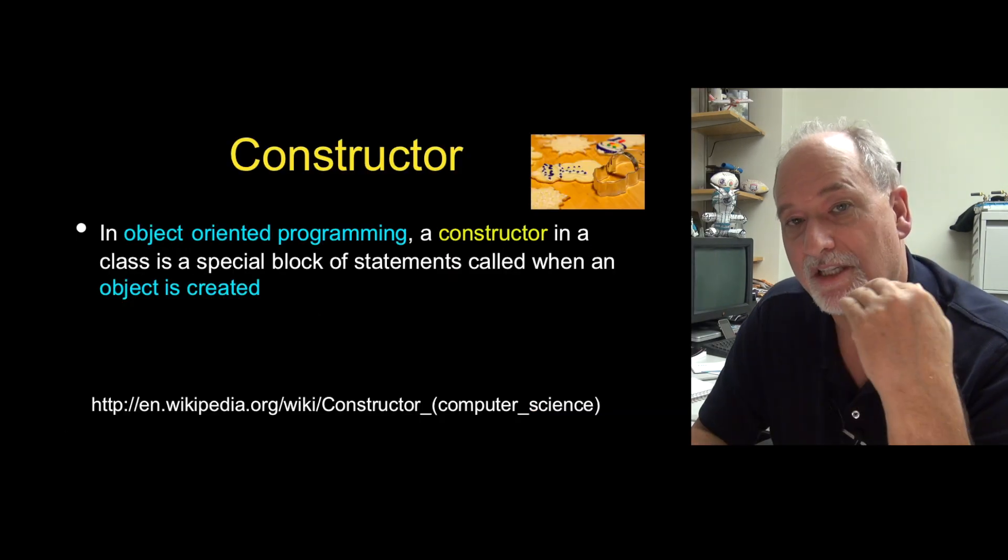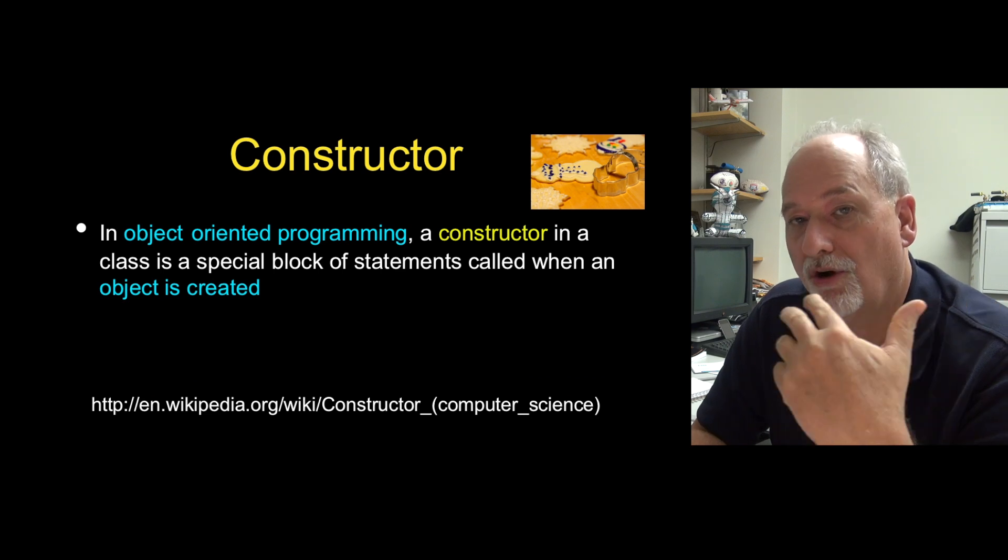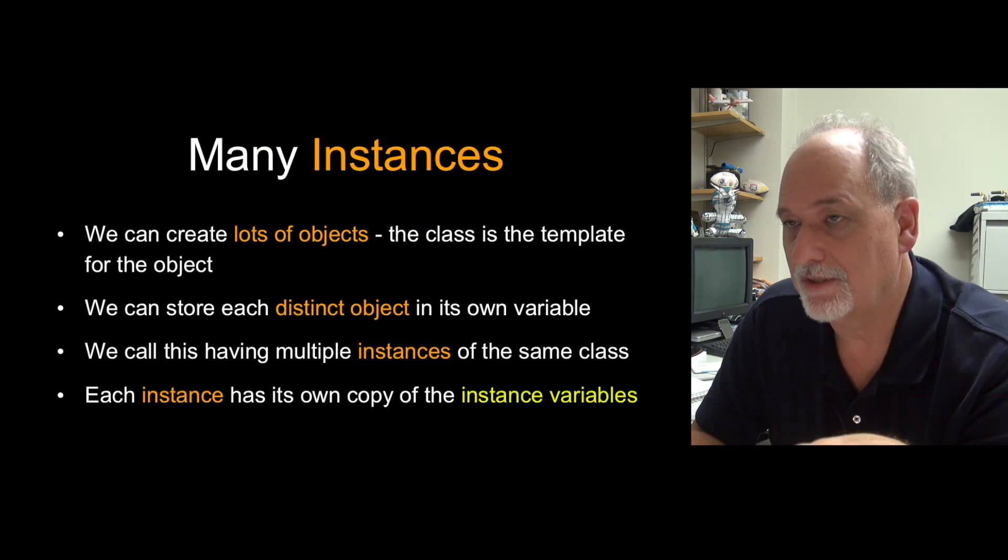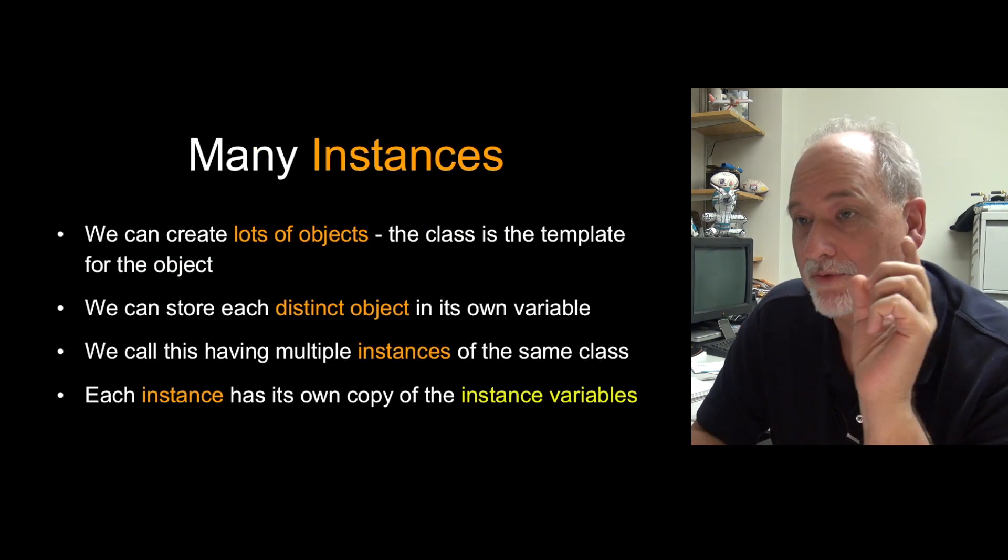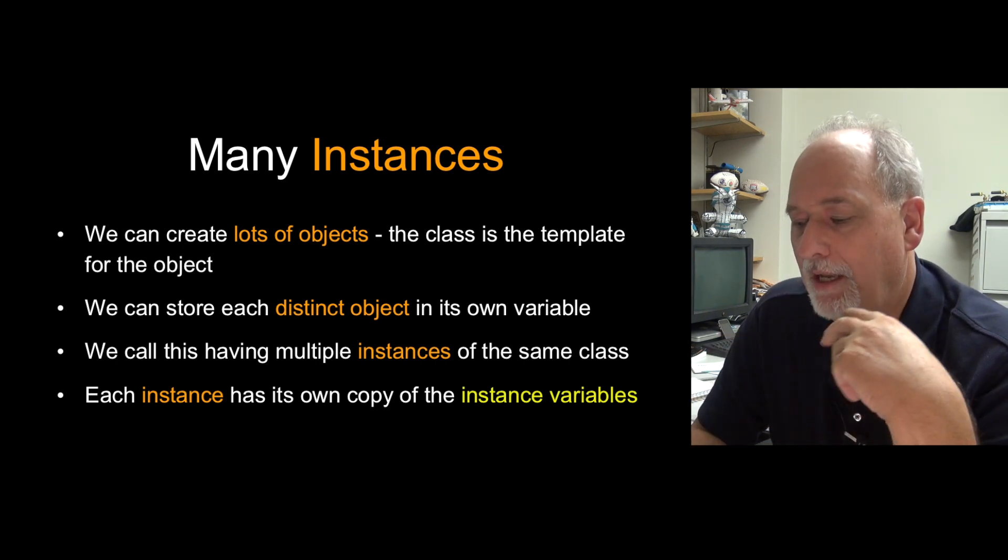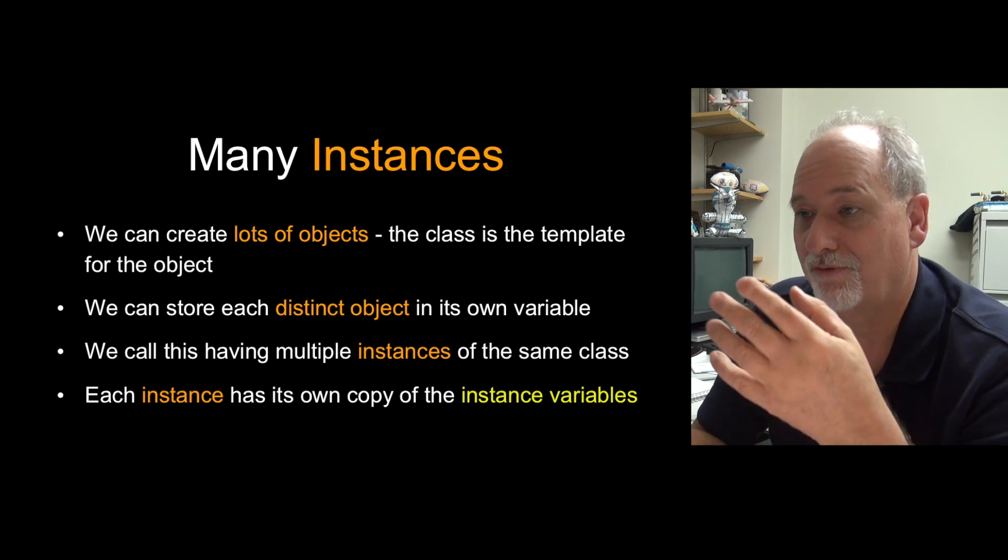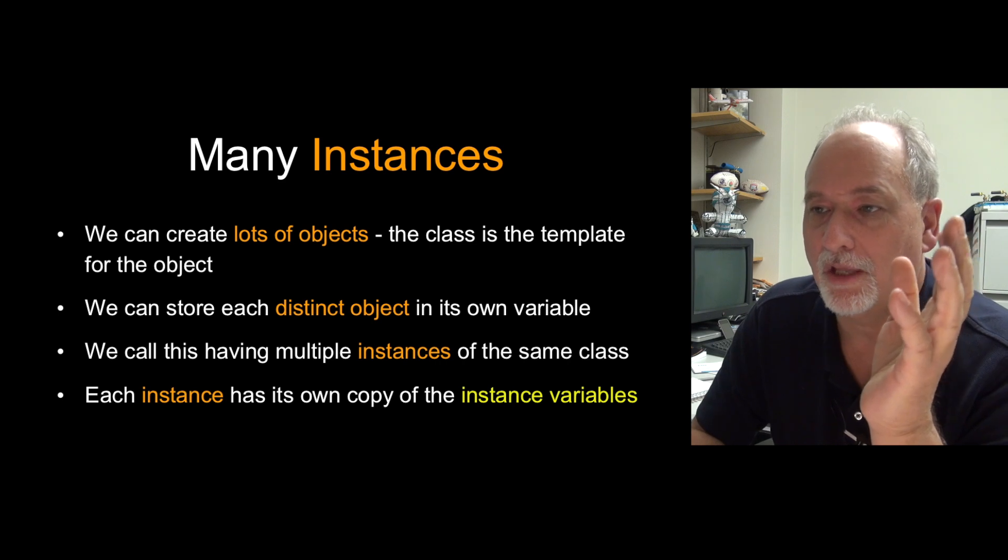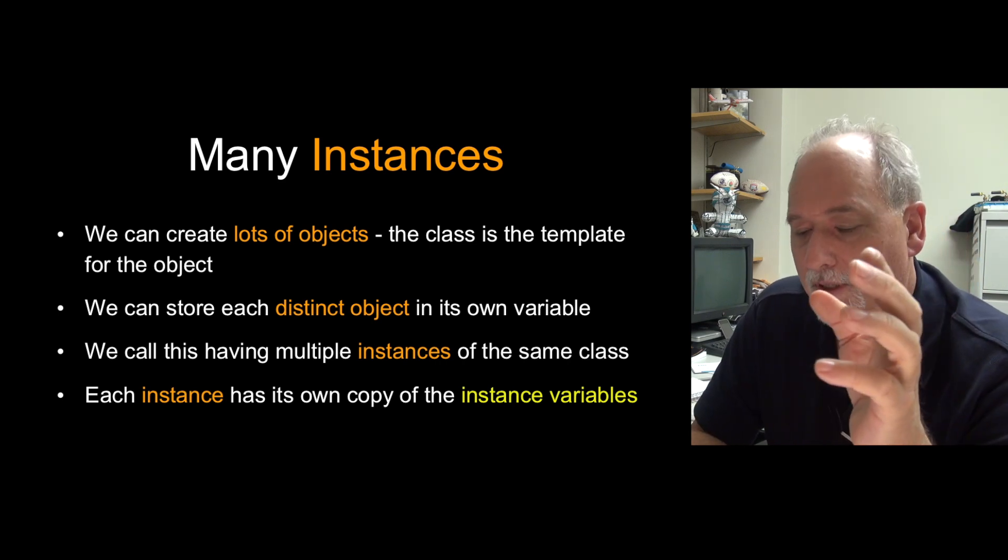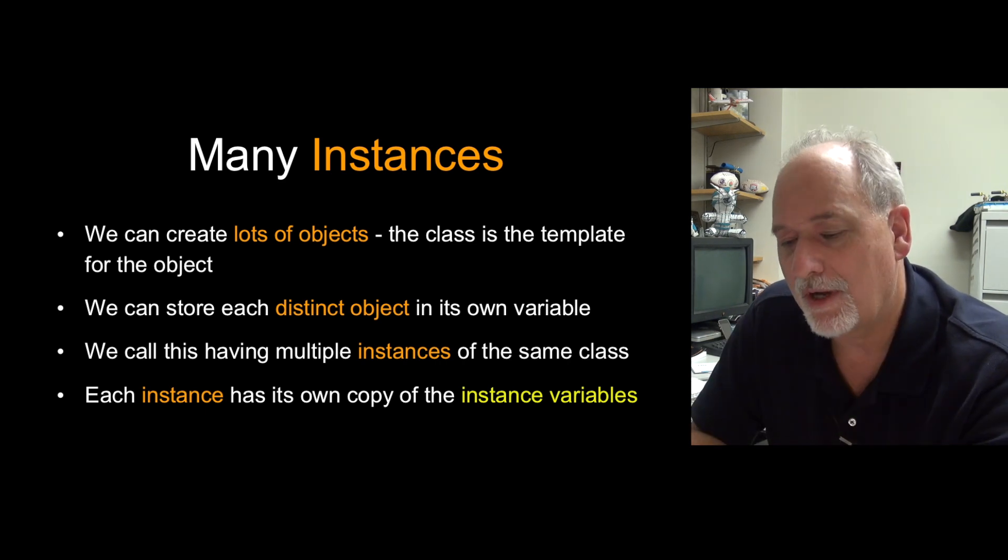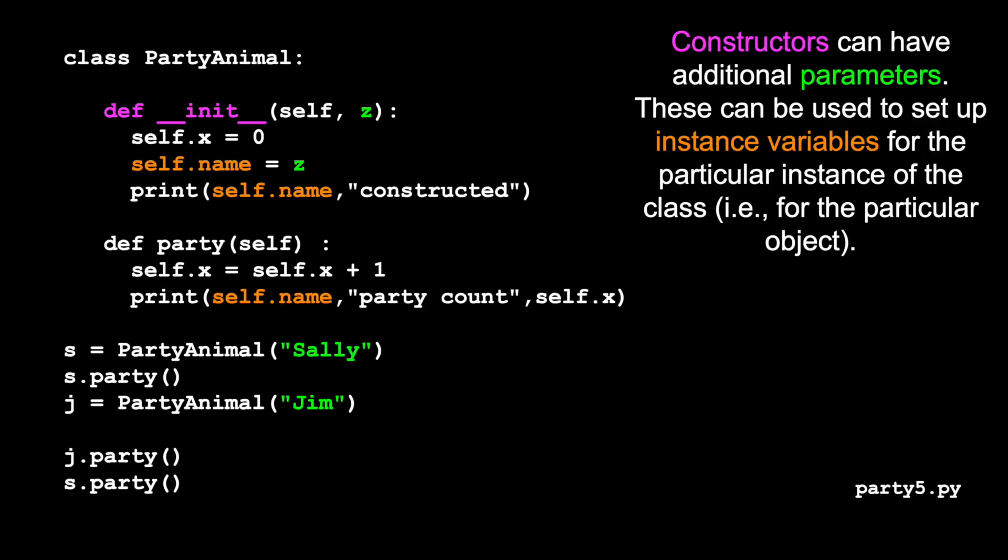The constructor is a special block of code that's called when the object is created to set the object up. We can create lots of instances. Everything we've done so far is we make a class and then we create one instance, one object. Each of these objects ends up being stored in its own variable. But the more interesting thing begins to happen when we have multiple instances of the same class sitting in different variables, and it has its own copy of the instance variables.